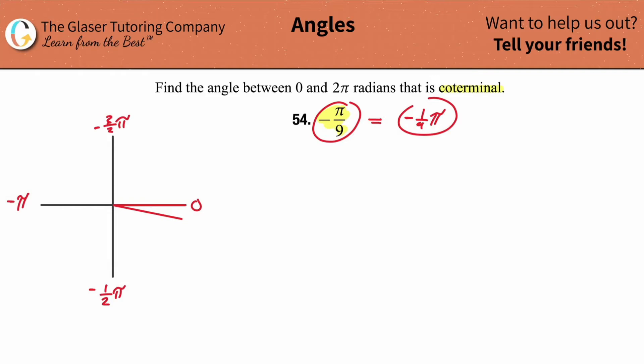This represents right in here negative 1/9 π. Now the thing is, this side always, this is always the initial side on the positive x-axis. And this side represents now the terminal side.